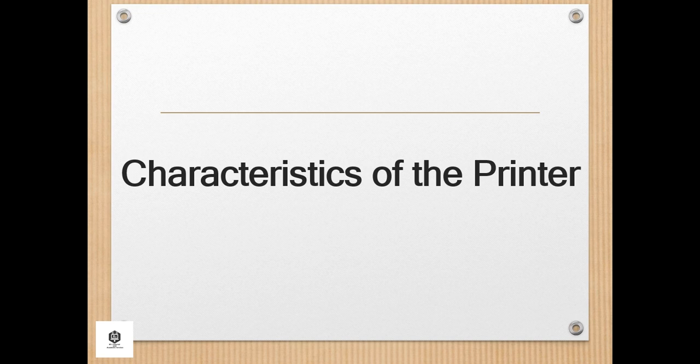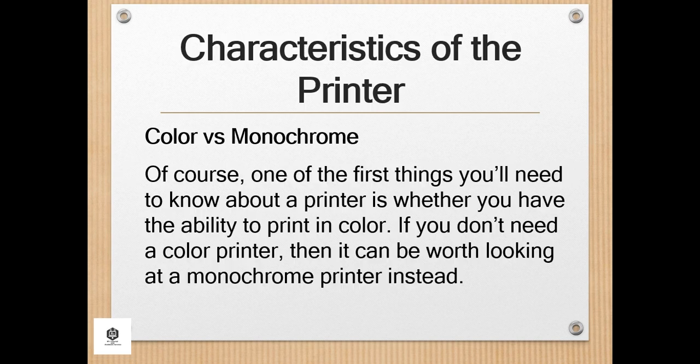Let us learn the characteristics of the printer. When looking at printers, people often want to know which one is best or how to decide which printer to get. There are various ways to decide on the right printer for you, so here are some specifications and characteristics that can help you tell the difference between different printer types. The first characteristic is color versus monochrome — one of the first things you'll need to know about the printer is whether you have the ability to print in color. If you don't need a color printer, it can be worth looking at a monochrome printer instead.